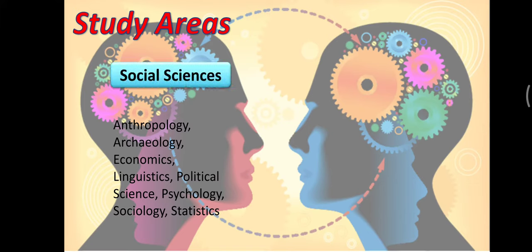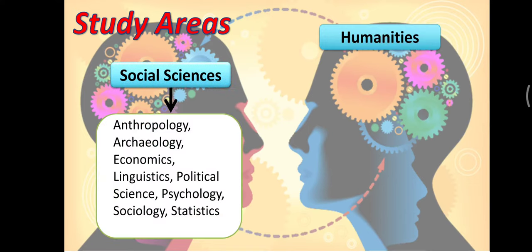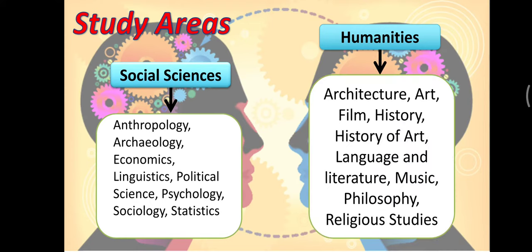The areas—for social sciences, we have anthropology, archaeology, economics, linguistics, political science, psychology, sociology, and statistics. These are some of the fields in social sciences. In the humanities, we have architecture, arts and film, history, history of art, language and literature, music, philosophy, religious studies. These are some of the fields that humanities focuses on, but not limited to these mentioned fields.